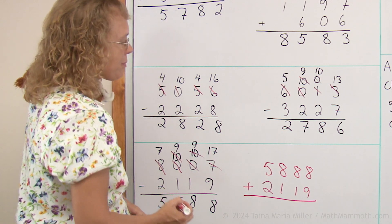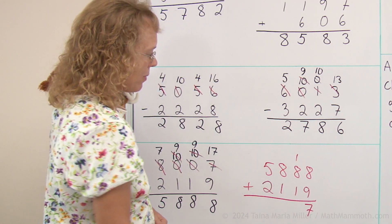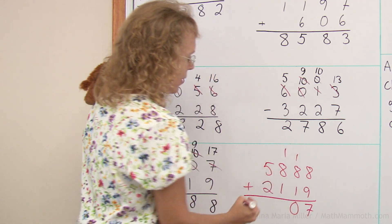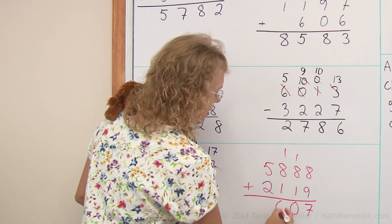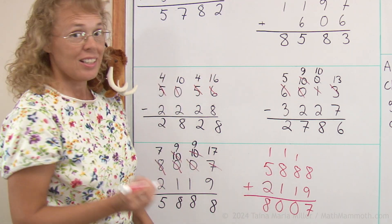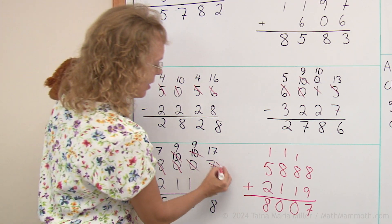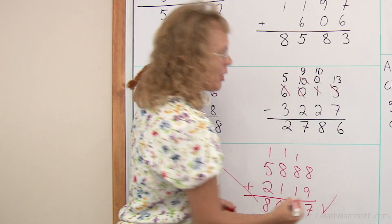All right. Eight plus nine is 17. Then over here we get ten. Over here we get ten. And here we get eight. And now, lastly, you compare. Is this the same as here? Eight thousand seven. Yes, it is. All is well.